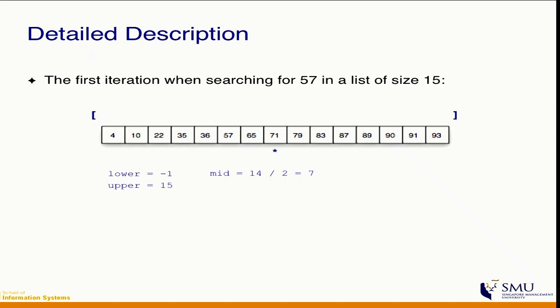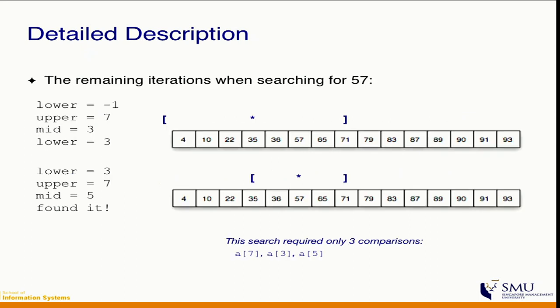Because the mid value 71 is larger than 57, we go to the left — moving the upper bracket down to the midpoint. We then find a new midpoint: (-1 + 7) / 2 = 3, which is index 3 with value 35. Since 35 ≠ 57 and 57 is larger, we go right. We narrow down again, find the next midpoint, and finally find 57.